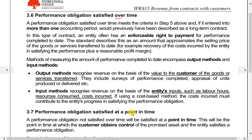For performance obligations satisfied over time, in construction contracts we have two methods: the output method — based on sales — and the input method — based on cost. When dealing with a construction contract, the first thing we do is determine the outcome.